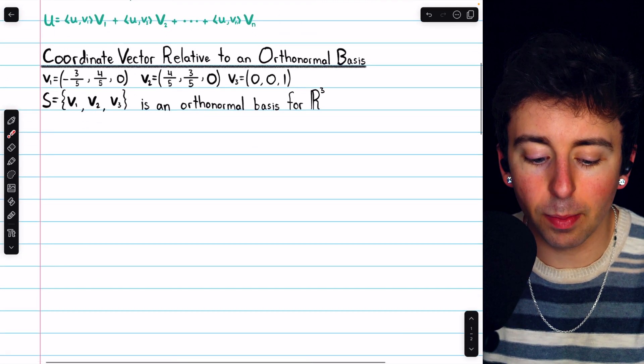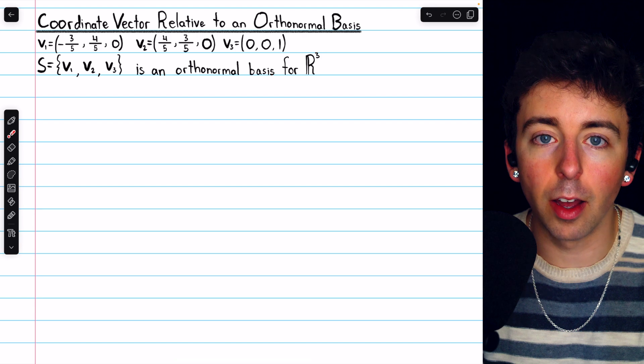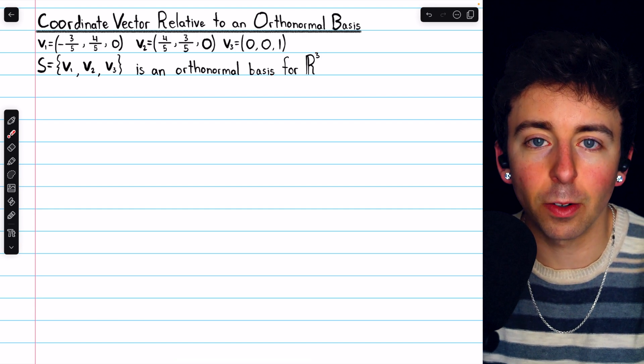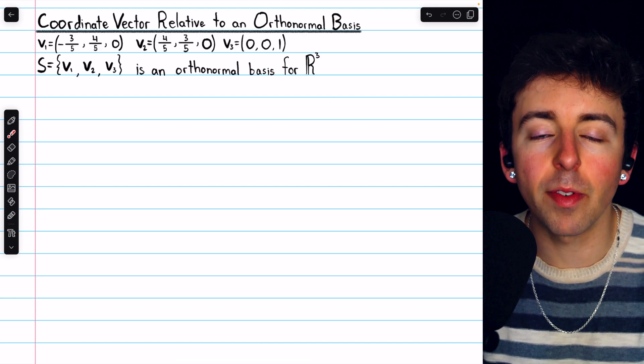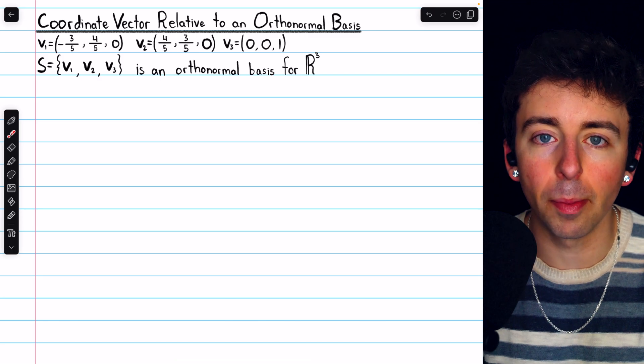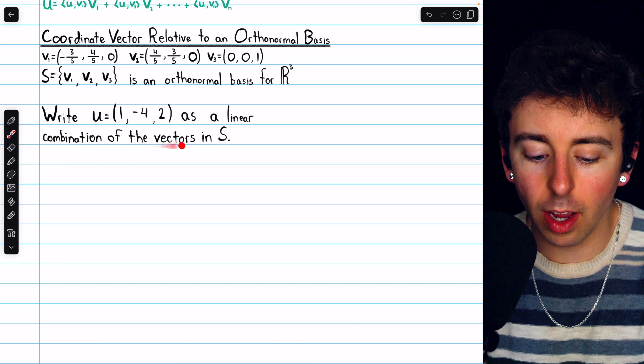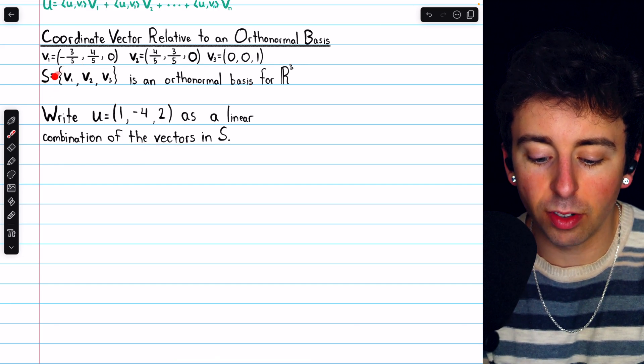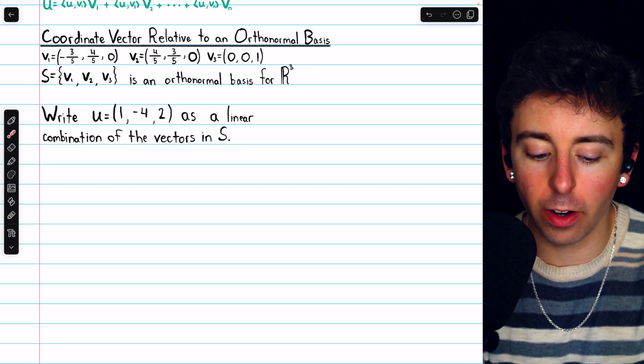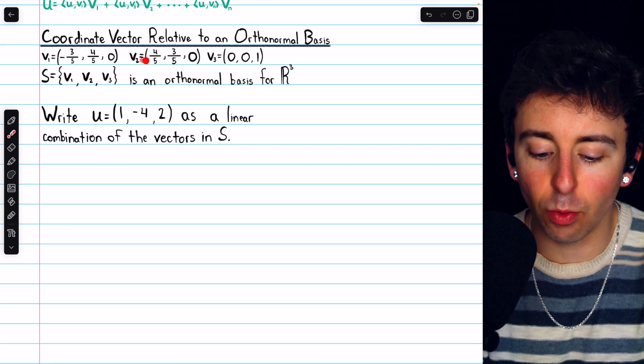Today, we'll do an example of writing a vector in terms of orthonormal basis vectors. We'll also write the coordinate vector relative to that orthonormal basis. So we are asked to write this vector u as a linear combination of the vectors in S, which is an orthonormal basis for R cubed containing these three vectors.